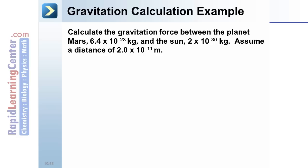Gravitation Calculation Example. Calculate the gravitational force between the planet Mars, 6.4 times 10 to the 23rd kilograms, and the Sun, 2 times 10 to the 30th kilograms. Assume a distance of 2 times 10 to the 11th meters. Note in the diagram, the gravitational force is attracting the objects, and we were given masses and distances.